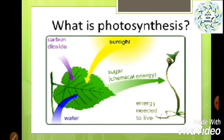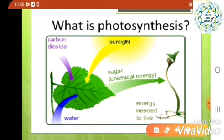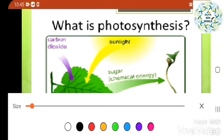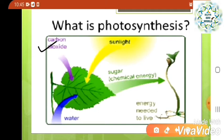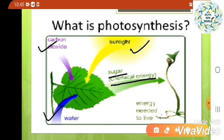What is photosynthesis? In the form of this diagram, we can easily understand that plants are using carbon dioxide from the atmosphere, sunlight, and water from the soil. All these micro molecules perform photosynthesis in the green parts of the plants — whether it is a stem or leaves, mostly in leaves — and they form chemical energy, or carbohydrates or sugar, and provide it to the whole plant for growth and energy needed to live.